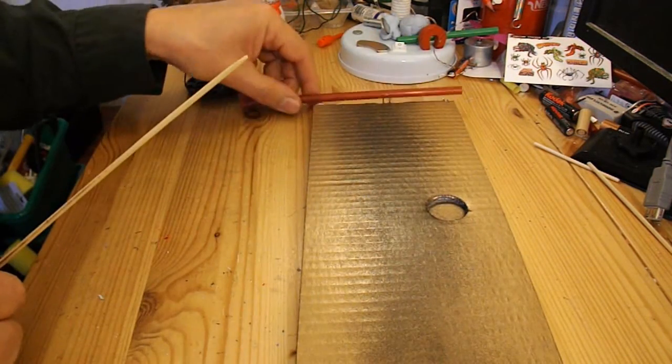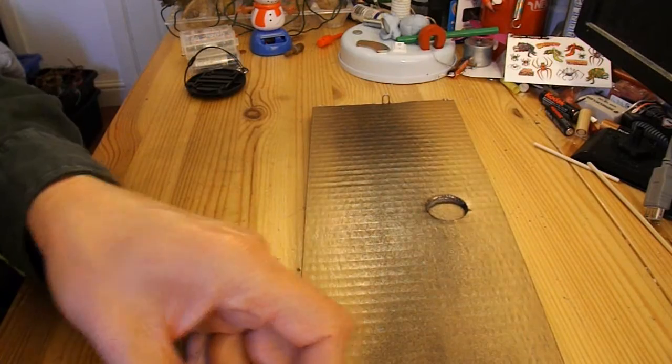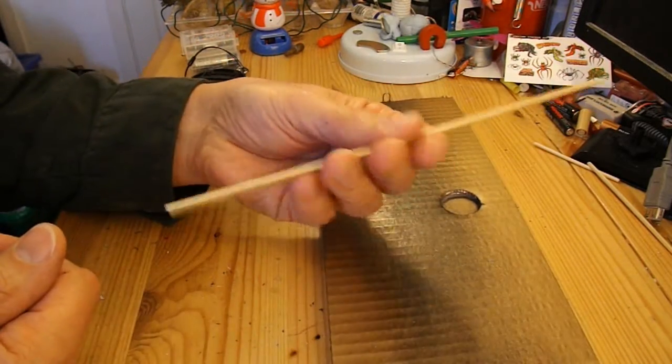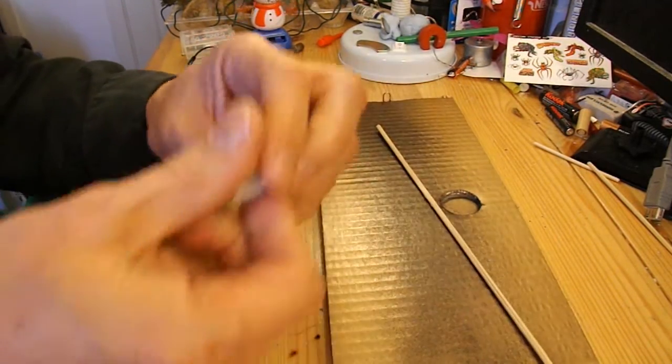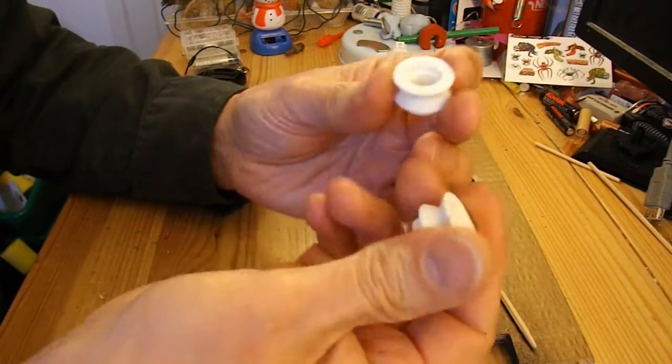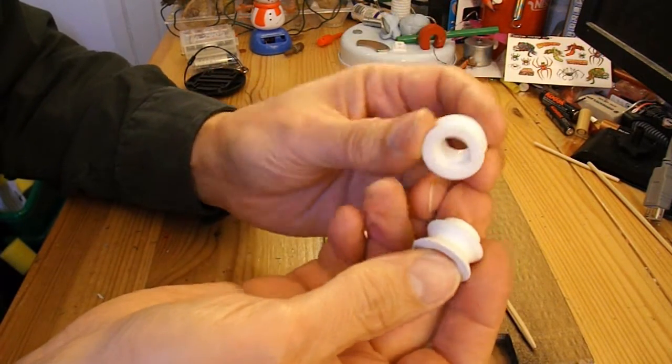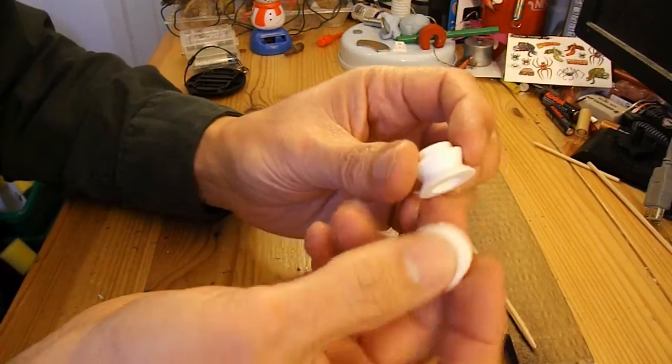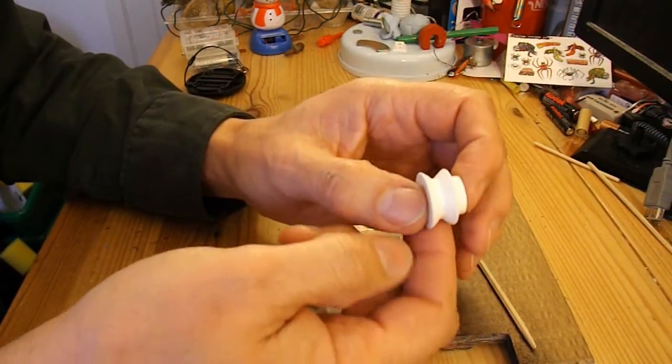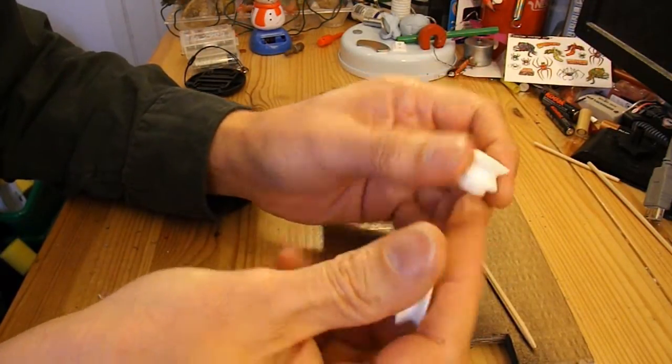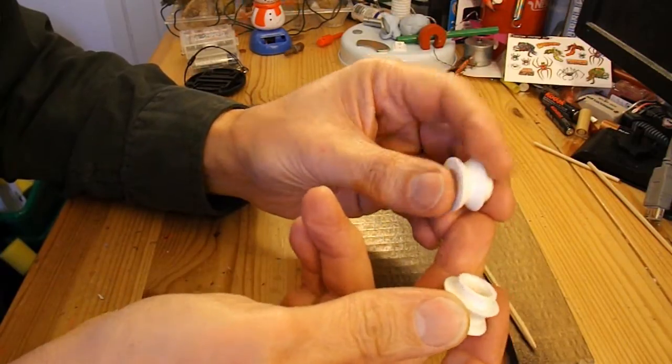I'll put some drinking straws on it front and back in a minute. Barbecue skewers for the axles, and I'm going to use these. They look like plastic pulleys. They're actually runners from the inside of my daughter's dishwasher that I took apart yesterday.